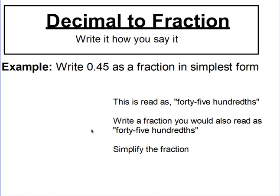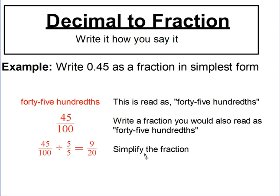This conversion is a decimal to a fraction, and it's fairly simple. If you can say a decimal out loud properly using place value, you can write it as a fraction. For 0.45, said aloud it's 0 and 45 hundredths. Since I'm saying 45 hundredths, I can write it as the fraction 45 over 100. From there I simplify, and 9 over 20 is the same thing as 0 and 45 hundredths.